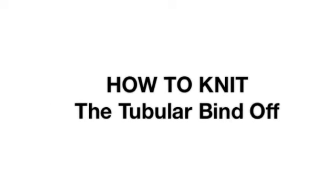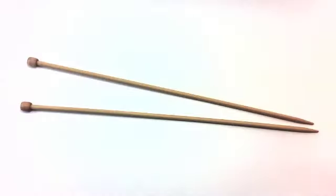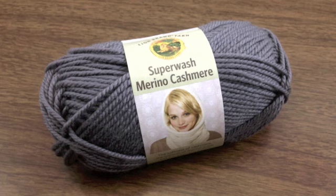How to knit the tubular bind off. For this tutorial, you will need a pair of knitting needles, a darning needle, and a ball of yarn.